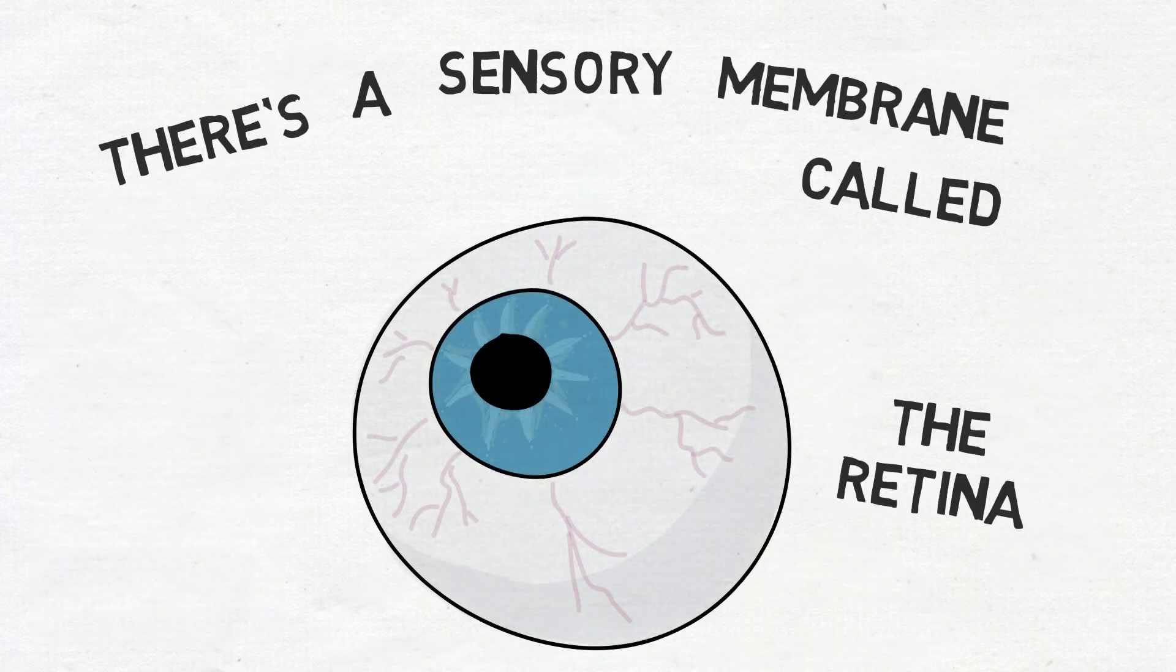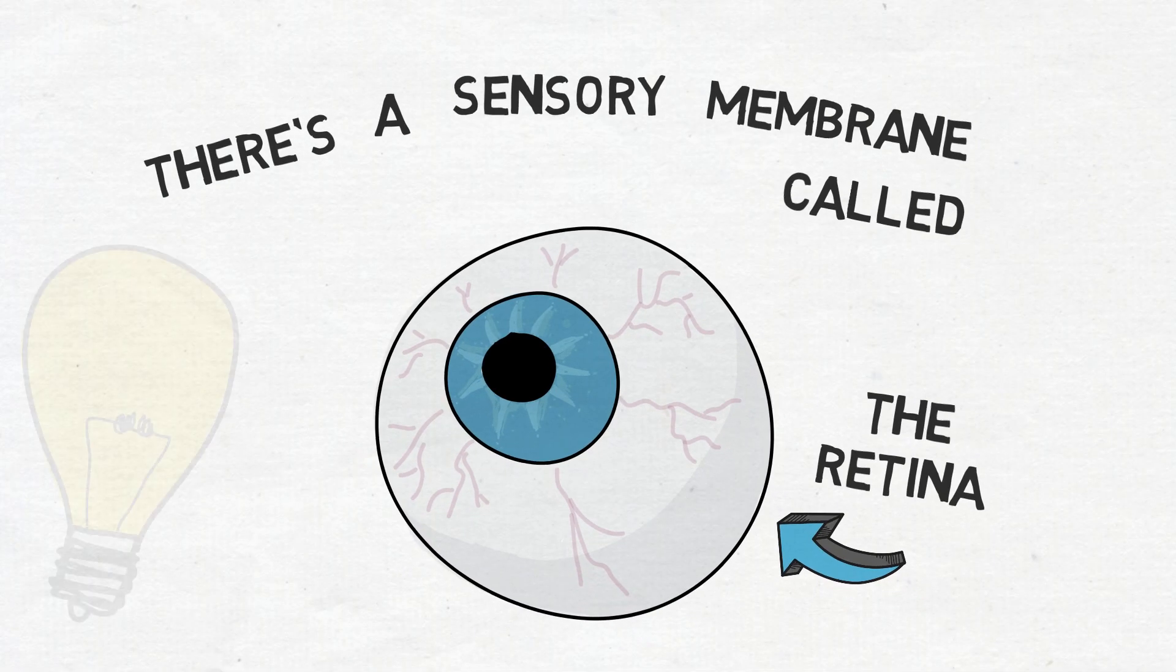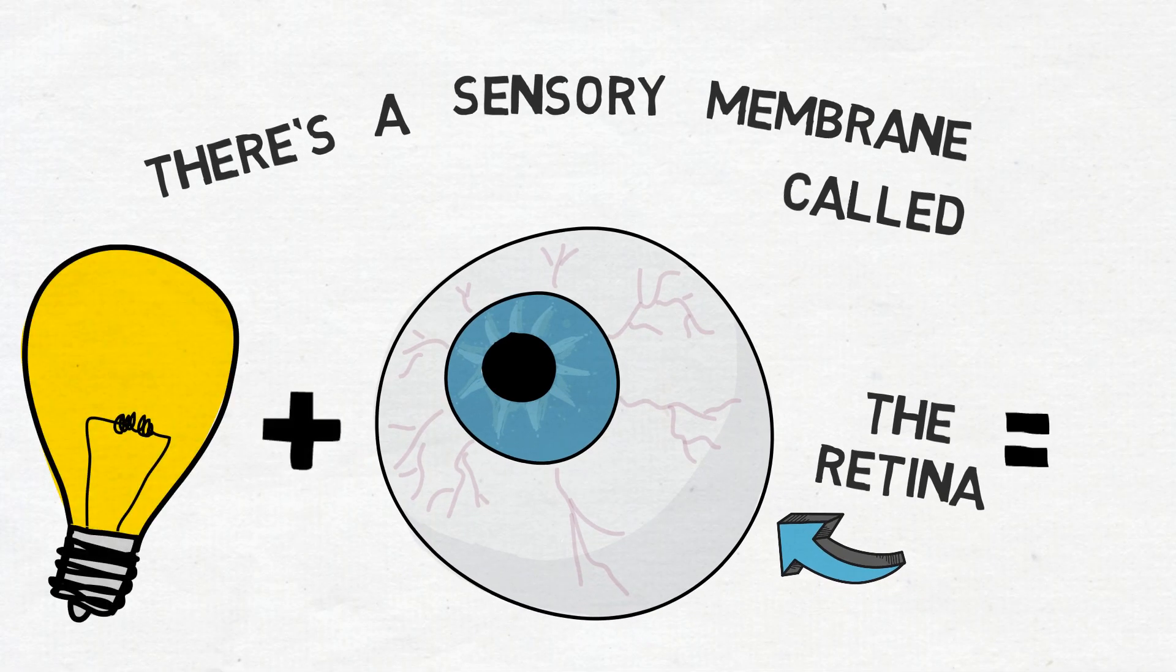There's a sensory membrane called the retina. It is positioned in the backs of our eyes. The retina contains a sub-population of light-sensitive cells, just like the sensor of a camera.